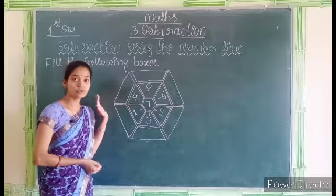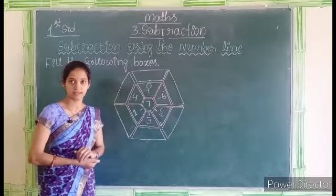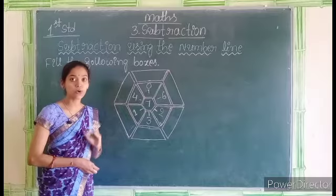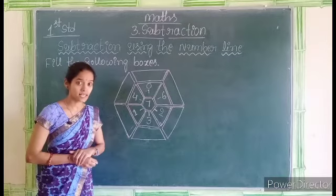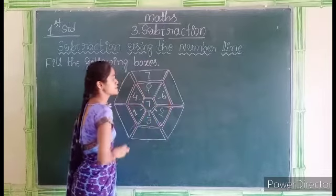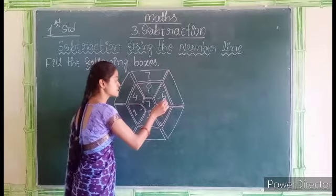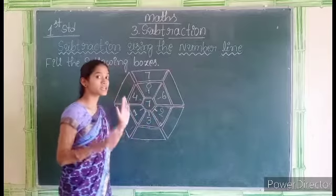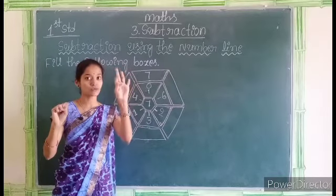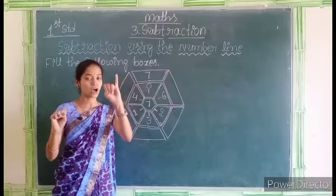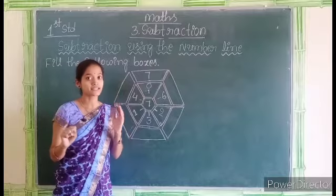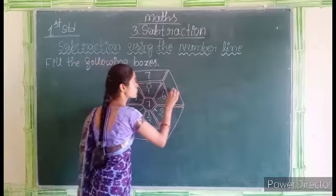Dear students, here we have to fill the empty boxes. 7 minus 0 — that is 7, so 7 should be written here. 7 minus 6: we have to subtract 6 from 7. 7, 1, 2, 3, 4, 5, 6. How many fingers left? Only 1. So 7 minus 6 is 1.